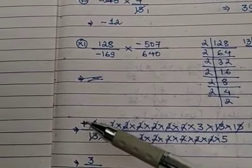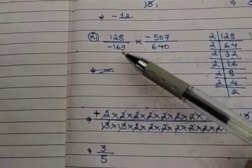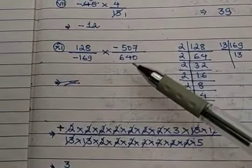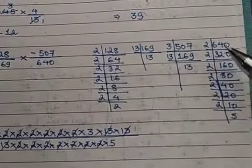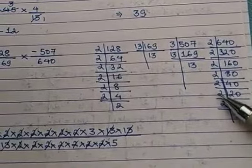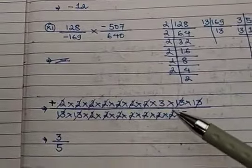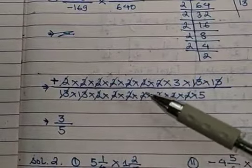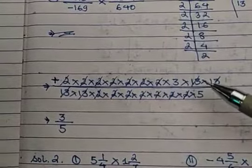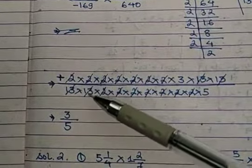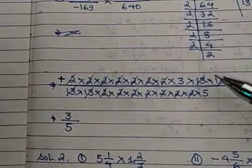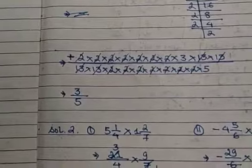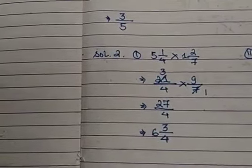Continuing Q11: in the denominator, 169 = 13 × 13, and 640 = seven 2s × 5. Placing all prime factors: numerator has seven 2s and 3 × 13 × 13; denominator has 13 × 13 and seven 2s and 5. The seven 2s cancel, and both 13 × 13 cancel. What remains is 3 in the numerator and 5 in the denominator, giving the answer 3/5.